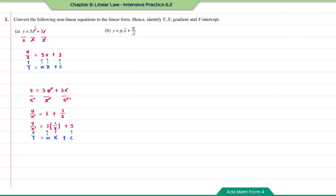Question B: y equals p times square root x plus q over square root x. The first approach is to multiply each term by square root x. This gives y times square root x equals px plus q, since square root x times square root x equals x and the square root x in the denominator cancels. Comparing with y equals mx plus c: y times square root x is the y, p is the m, x is the x, and q is the c.